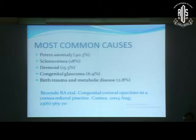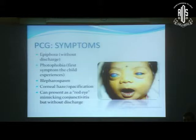According to the literature, the most common conditions associated with congenital corneal clouding are Peter's anomaly, sclerocornea, dermoid, congenital glaucoma, birth trauma, and metabolic disease.